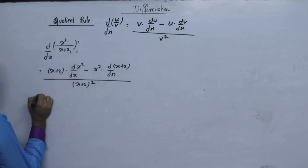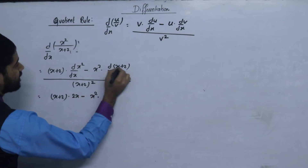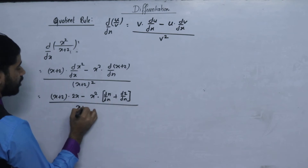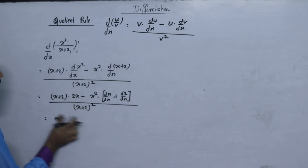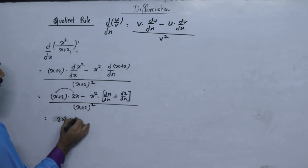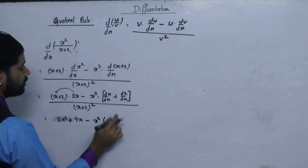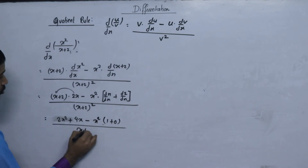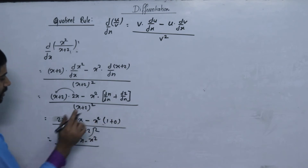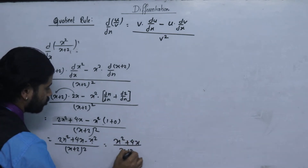So v equals x plus 2, and u equals x squared. This gives us 2x times (x plus 2) minus x squared times 1, upon (x plus 2) squared. Expanding: 2x squared plus 4x minus x squared, upon (x plus 2) squared. Combining like terms: 2x squared minus x squared gives x squared plus 4x, upon (x plus 2) squared.